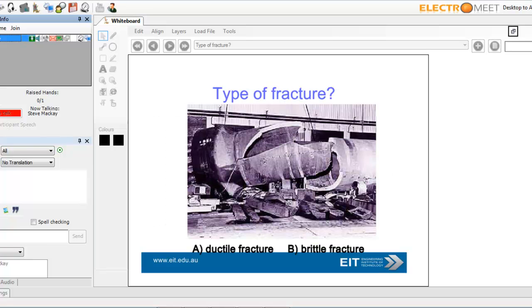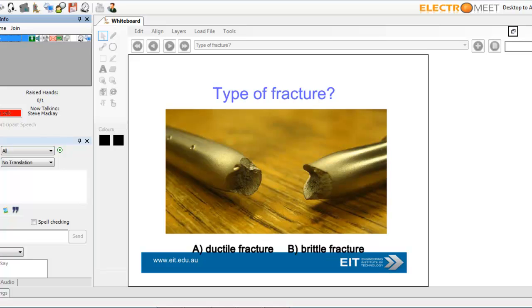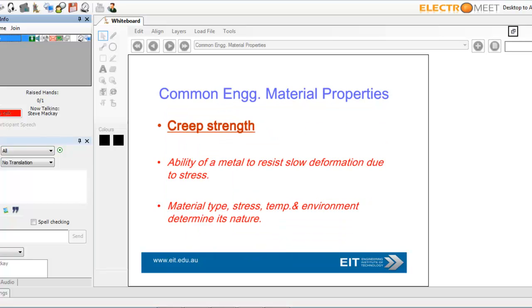Here's an example here. This is ductile fracture or brittle fracture? Well, you can see there's very little change there. It's suddenly just cracked, propagated. What would you think that would be? I think you can guess that there's no stretching. If you think about a piece of metal being stretched, this is unlikely to be that, so you could probably say that's a brittle fracture. Here's another one, ductile or brittle fracture. What would you say that one is? Send it in to me.